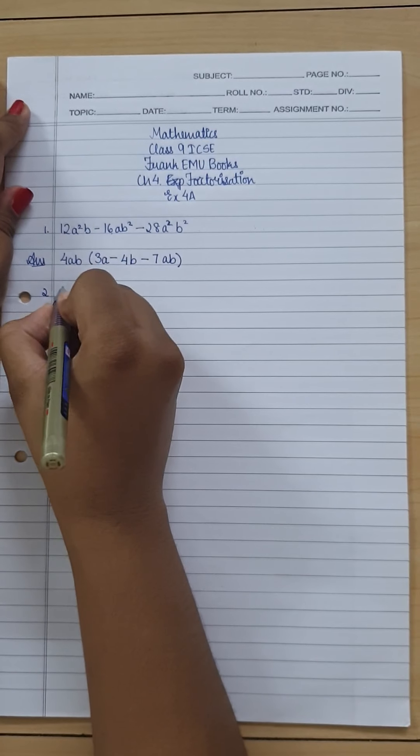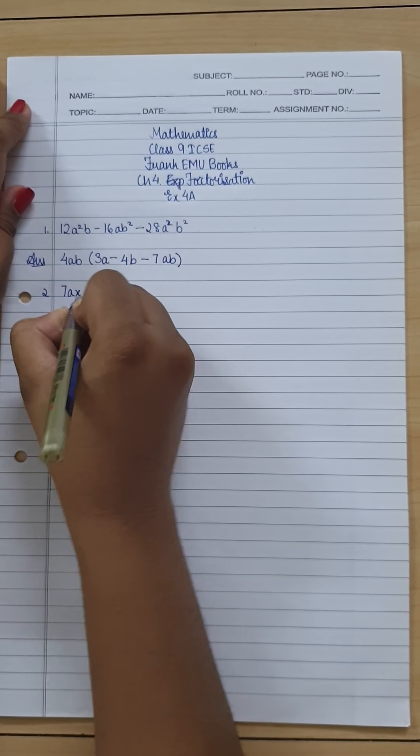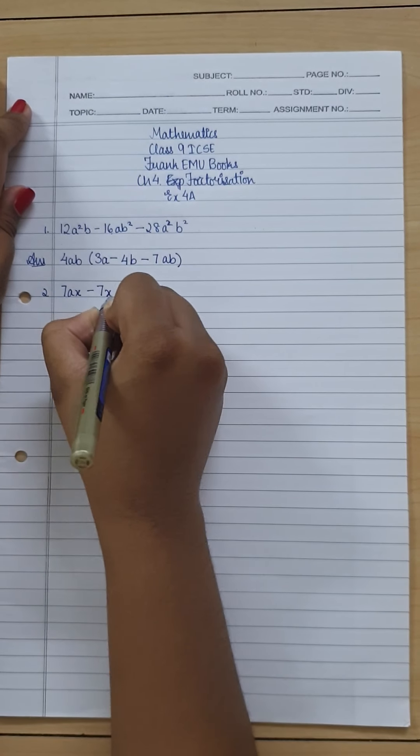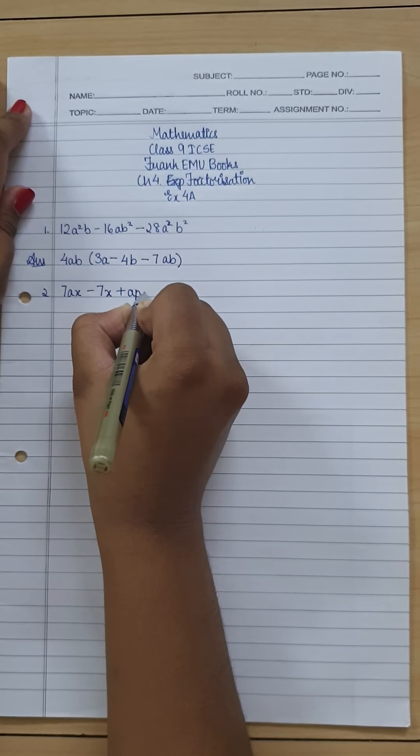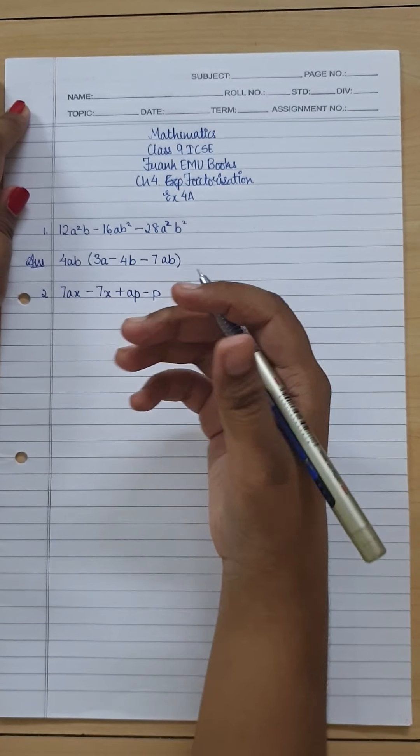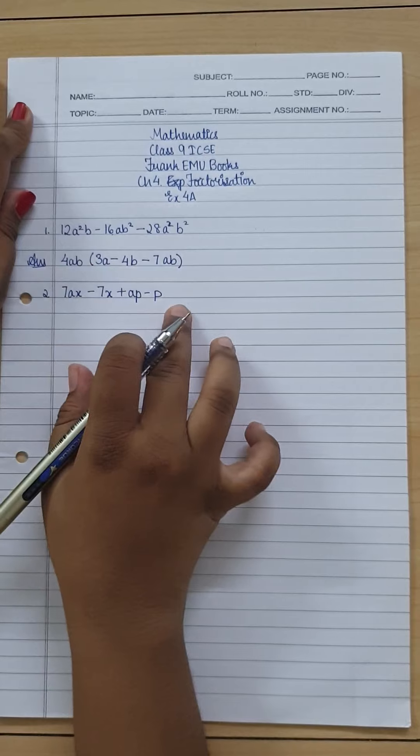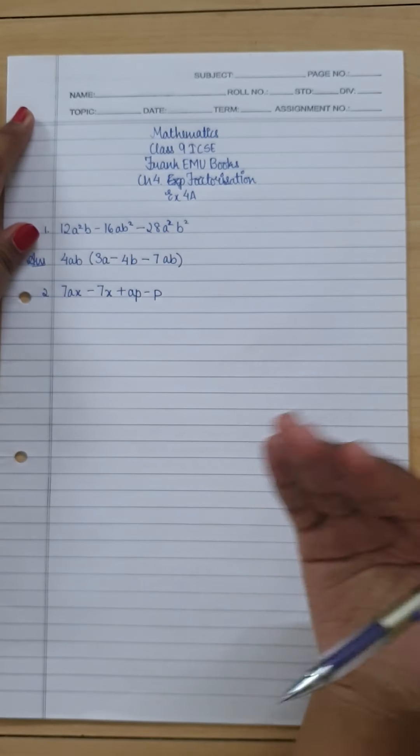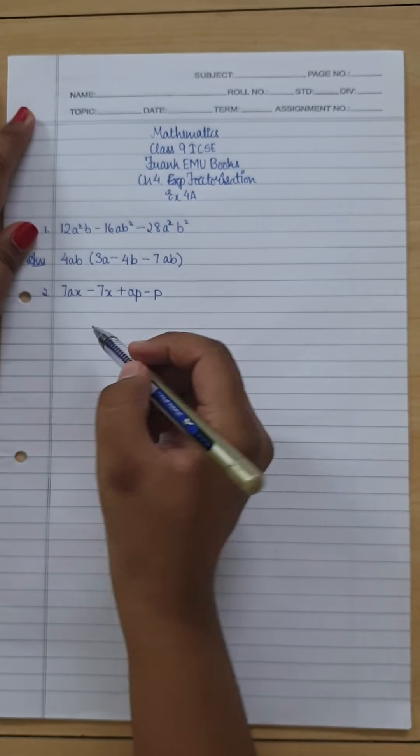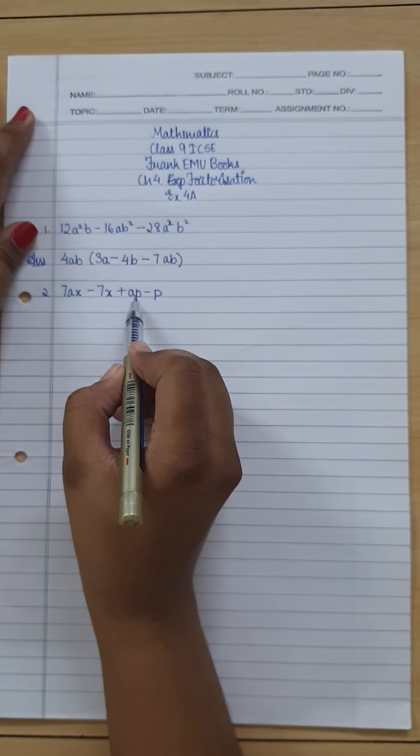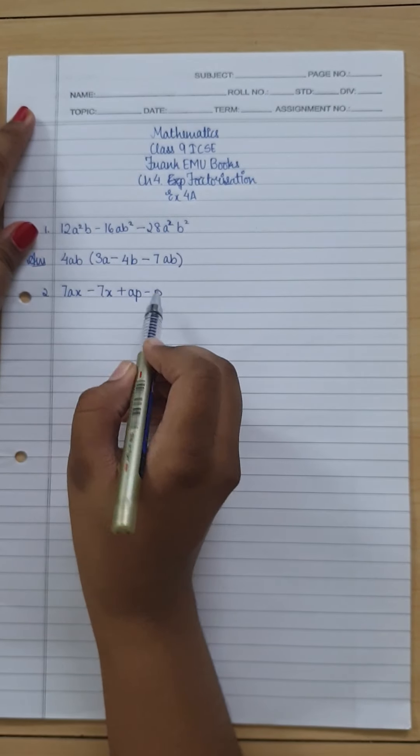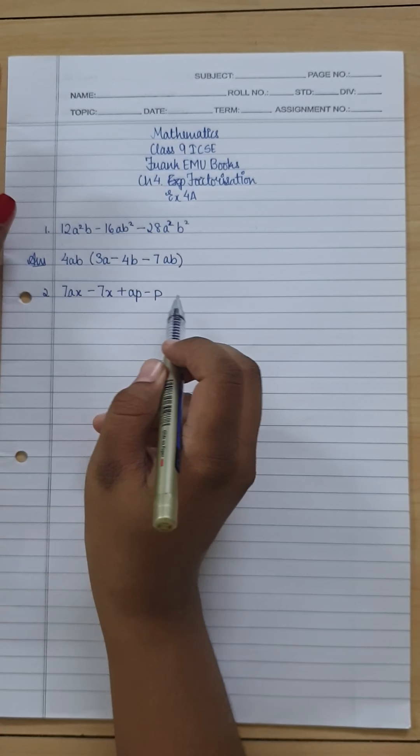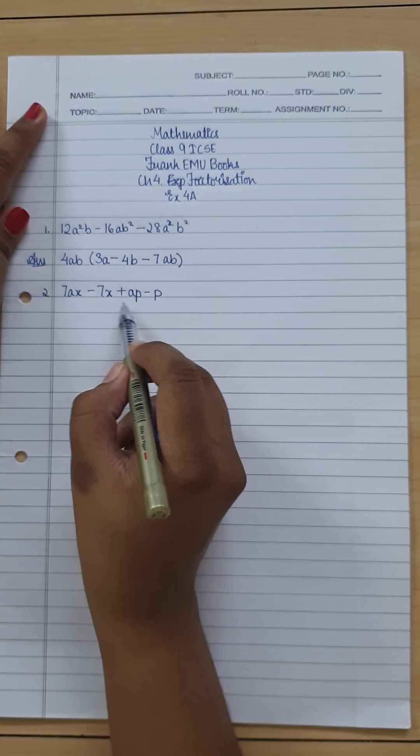It's 7ax - 7x + ap - p. Now when you're having four terms, you just group the terms. So here you can group any two terms together. It could also be that you group the first and third and the second and fourth, but in this one it's easier to group the first and second, and third and fourth.